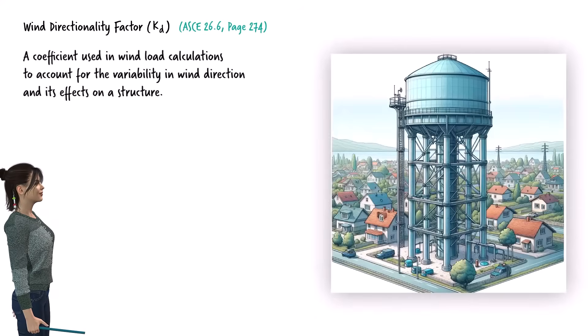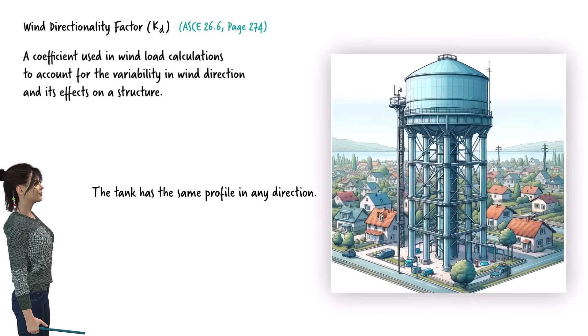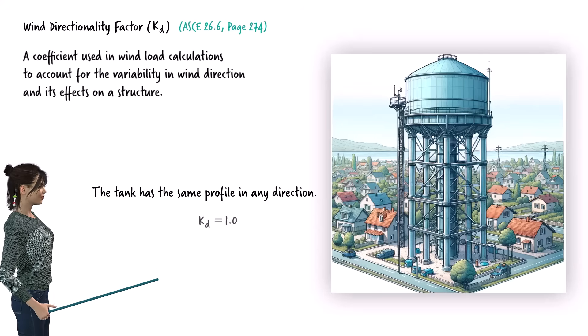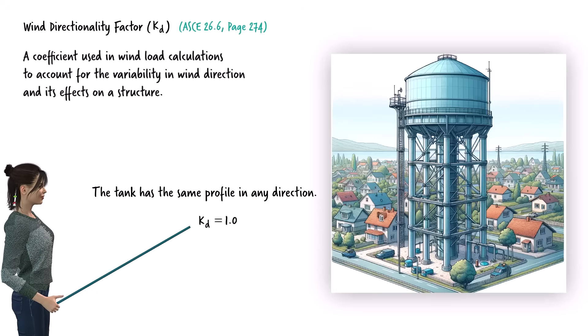Consider a round, symmetrical water tank. It presents the same profile to the wind from any direction. This uniformity ensures that the wind force acting on the structure is consistent regardless of the wind direction. Because of this, the wind directionality factor for the tank is 1.